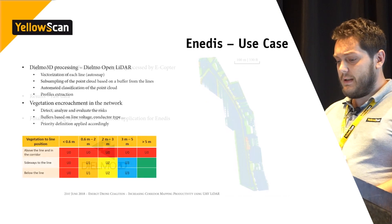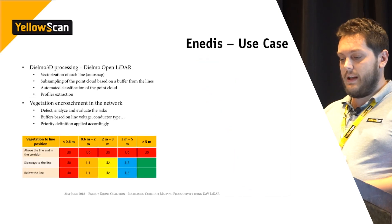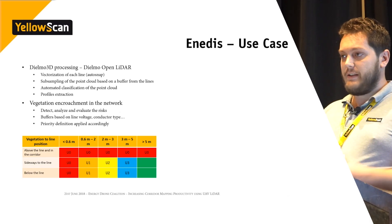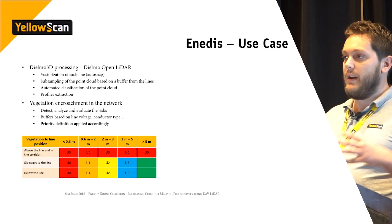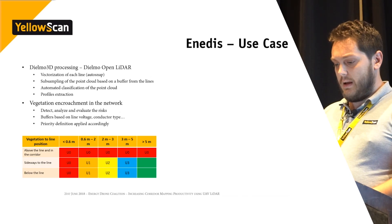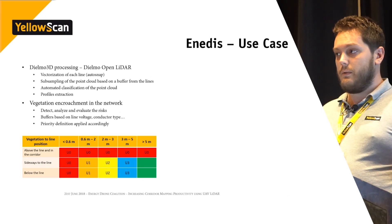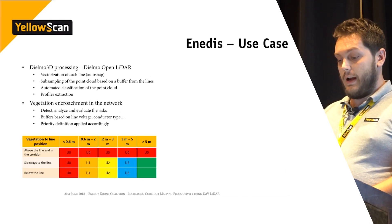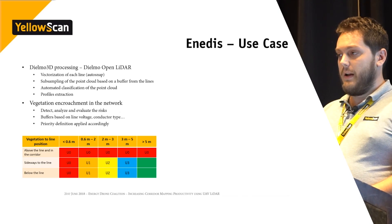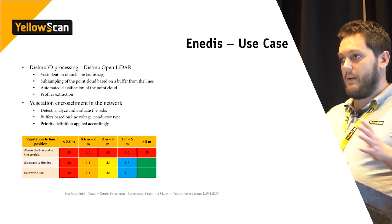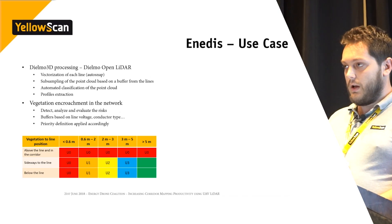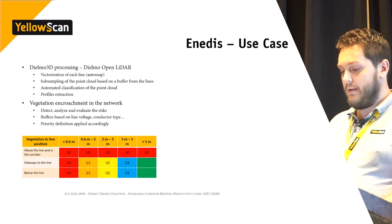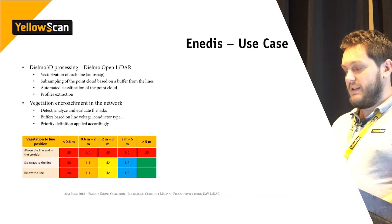The final processing and analysis were done by DLMO. Using the DLMO OpenLiDAR software, they first vectorized the power line with an auto-snap feature, then subsampled the point cloud to only a buffer zone around the power line, and then ran an automated classification of that subsampled point cloud to extract all profiles and information needed.